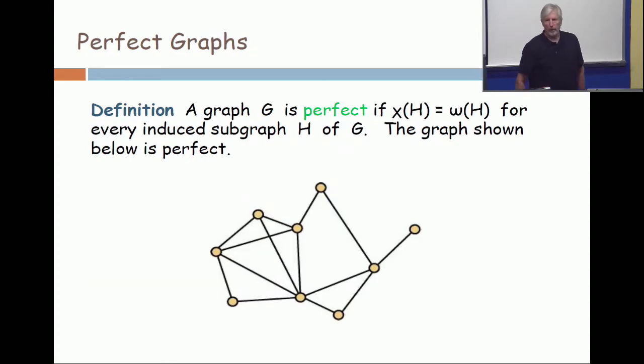And so we're going to start with a definition. A graph is perfect if the chromatic number of H is the maximum clique size of H for every induced subgraph of G. Of course that also requires that the chromatic number of G is the maximum clique size of G.